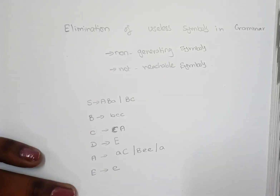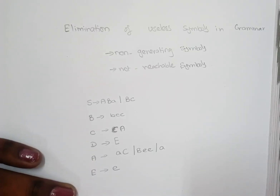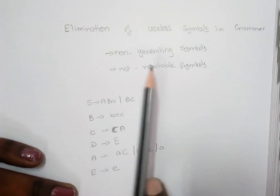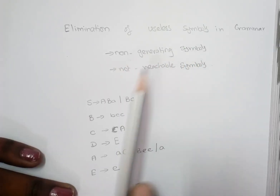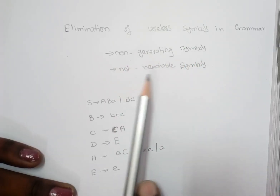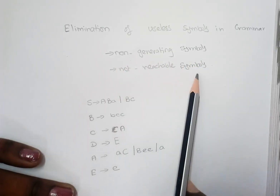Hello everyone. In this session we are going to see how to eliminate useless symbols from the grammar. There are two types of useless symbols: one is a non-generating symbol, and the next one is a not-reachable symbol.